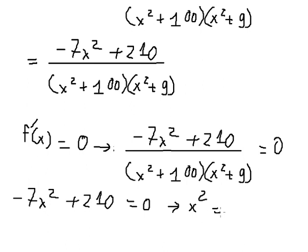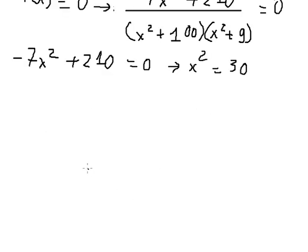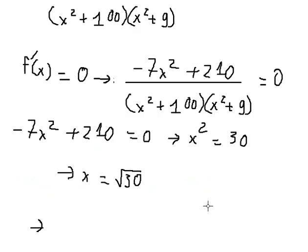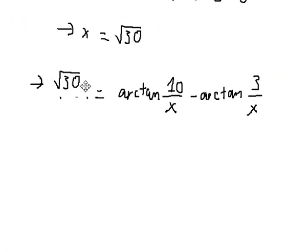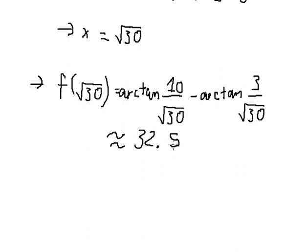So we have s² = 30. Because the value should be positive, we select only s = √30. After substituting this back, you can find the maximum viewing angle, which is about 30°. That is the final answer. This is the end — thank you for watching.